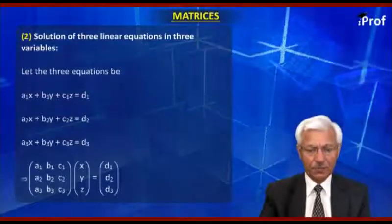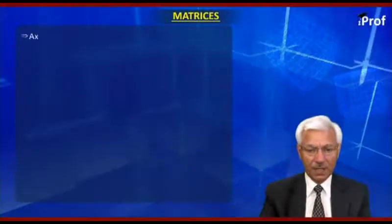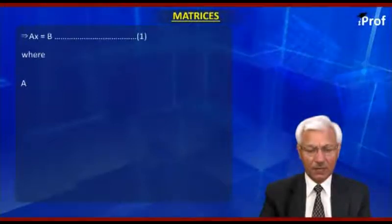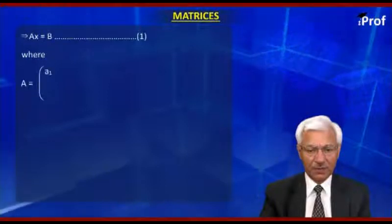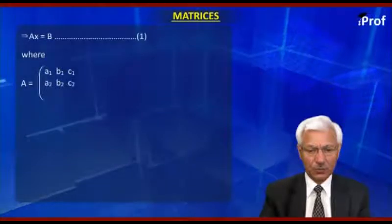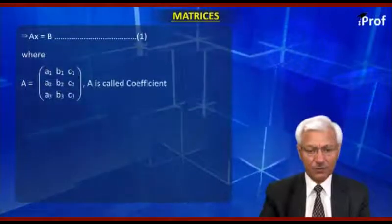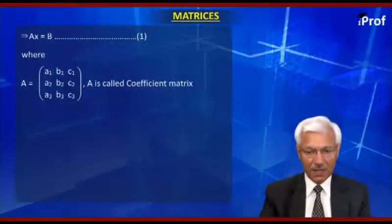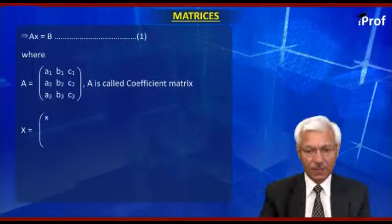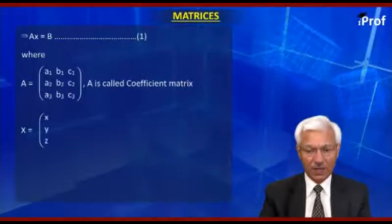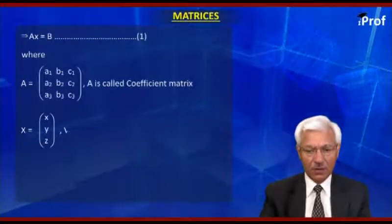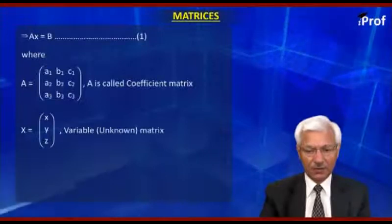which is of the form AX = B, where A is equal to the matrix a1, b1, c1, a2, b2, c2, a3, b3, c3. A is called the coefficient matrix, and X is equal to x, y, z, which is called variable or unknown matrix,